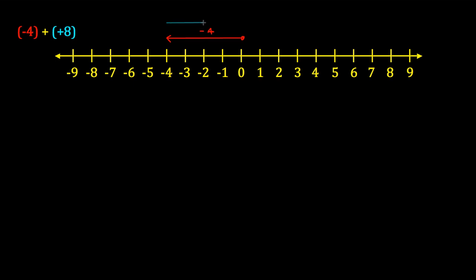So starting with its tail where we finished off at the negative four, I now move one, two, three, four, five, six, seven, eight units to the right.